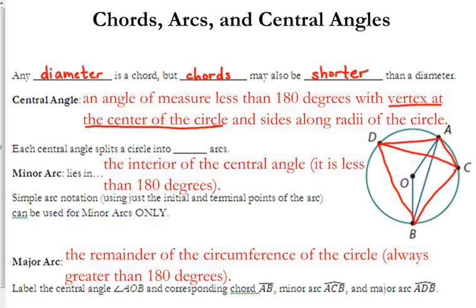So, AOB, angle AOB, would be a central angle here. This angle right here would be a central angle in this circle. And central angles are always less than 180 degrees.